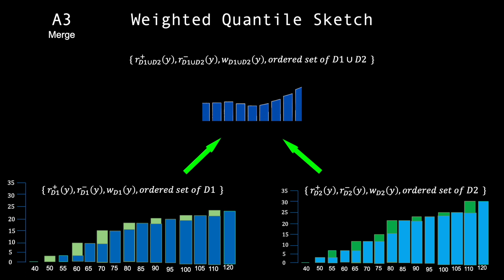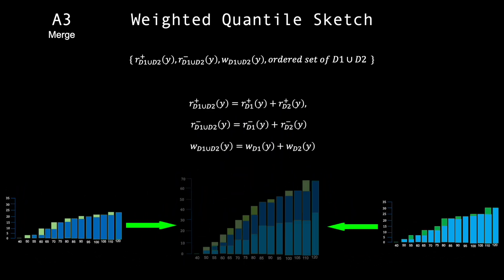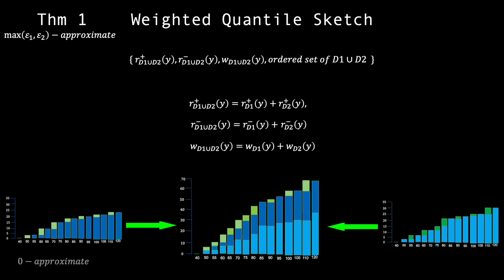We basically just add the upper, lower and weight functions together to form the new upper, lower and weight functions. On top of this, theorem 1 gives us that the new summary is the maximum epsilon approximate of both summaries. Thus, the new summary would be zero approximate if both were originally zero approximate.